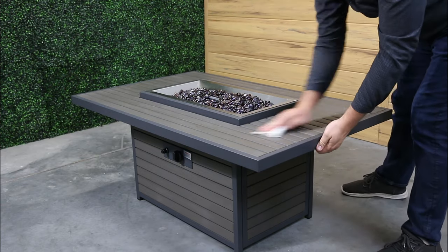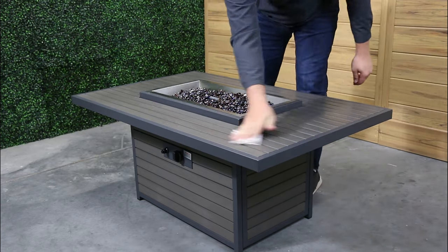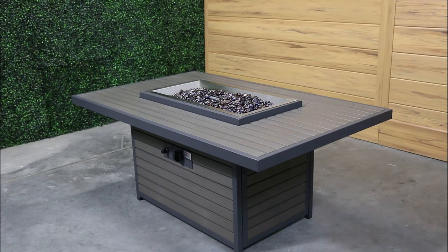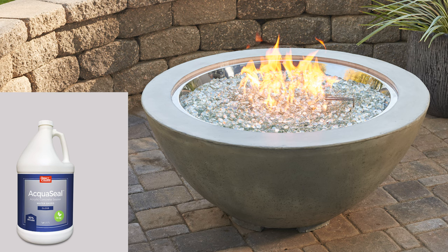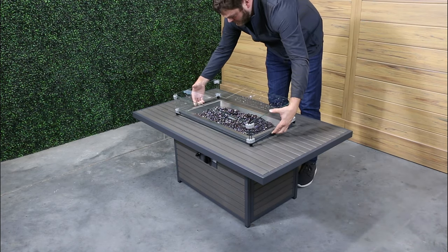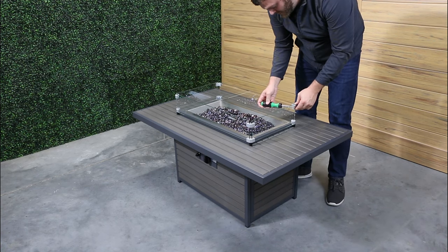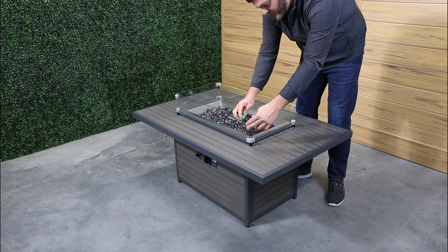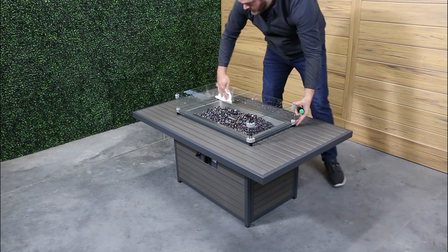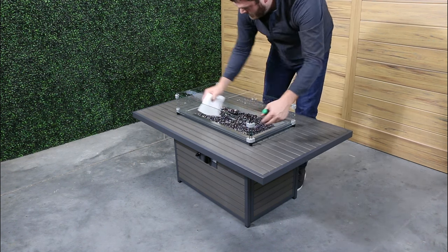Clean off fire pit top and base with a damp cloth. If the top is stainless steel, a commercially available stainless steel cleaner is recommended. If the top is super cast, resealing it with concrete sealer may be needed. Tighten screws on glass guard clips and set on fire pit top. Clean glass guard with Windex and a paper towel.